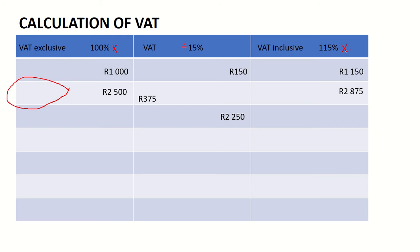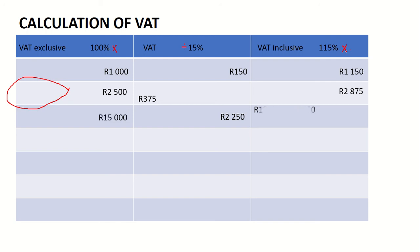Remember: you multiply by what you want and divide by what you're given. In this case I wanted the price exclusive of VAT, and that price exclusive of VAT will be R15000. You then just add the two amounts to get the price inclusive of VAT, and the price inclusive of VAT will be R17250.